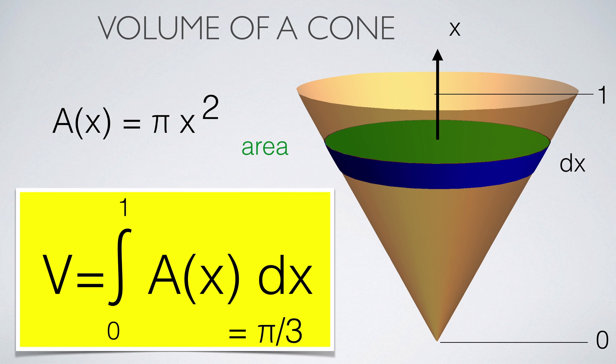We can now also compute volumes of solids. Just slice the body along some convenient axis, then find the area A(x) at the height x. When summing over all the slices A(x)dx, we get the volume. In the case of a cone, the area is πx². It can be integrated easily. We see that the volume is π/3, which is a third of the volume of the cylinder of radius one.